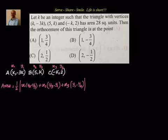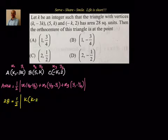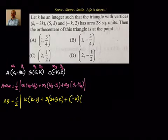We know that area of triangle is given by half times sigma of x1(y2 - y3). So substituting the values: 28 = half times [k(k - 2) + 5(2 + 3k) + (-k)(-3k - k)].